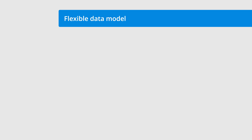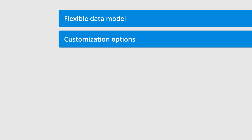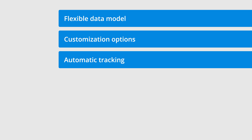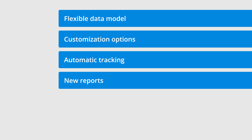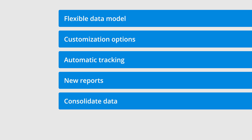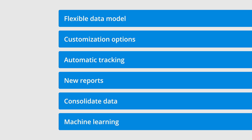Benefits of GA4 include: a new flexible data model that gives you control over the information you send to Google Analytics and how it appears in your reports; new customization options, including the ability to customize the standard reports; automatic tracking of important actions people take on your website, including when people scroll, watch embedded YouTube videos, click outbound links, and more; a number of new reports; if you have a website and an app, you can consolidate data into a single set of reports; and built-in machine learning which drives automated insights, new predictive metrics, and more.